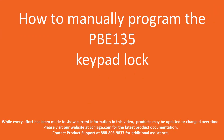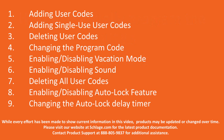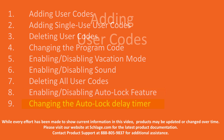Today, we will discuss the steps for programming the PBE-135 lock. We will be covering the following programming steps: adding and deleting user codes, adding single-use user codes, changing the six-digit programming code, enabling and disabling vacation mode, enabling and disabling sounds, deleting all current user codes, enabling and disabling the auto-lock feature, and changing the auto-lock delay timer.